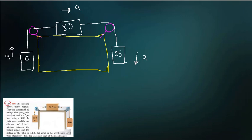The drawing shows three objects, they are connected by strings and pass over massless and frictionless pulleys. The objects move and the coefficient of kinetic friction between the middle object and the surface of the table is 0.1. So there's going to be friction, mu is 0.1. What is the acceleration of the three objects and then find the tension in each of the two strings?